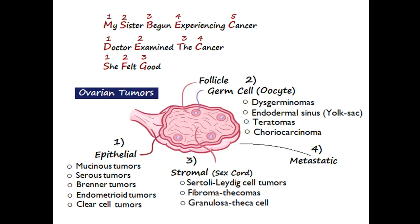The third class of tumors are the stromal or sex cord tumors. We remember their names by the sentence 'She felt good' — S for Sertoli-Leydig cell tumors, F for fibromathecomas, and G for granulosa-theca cell tumors. Metastatic tumors are any tumor that originates somewhere else in the body and comes to lie in the ovary through hematogenous or lymphatic spread, developing into a tumor there.